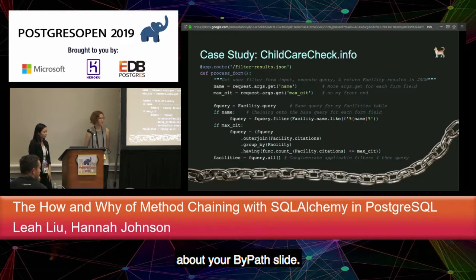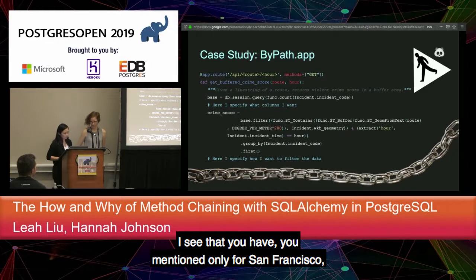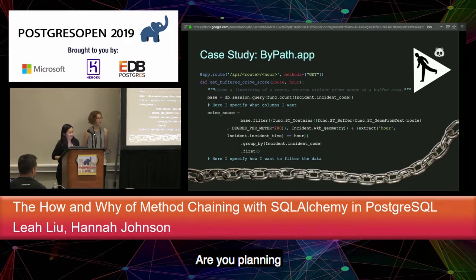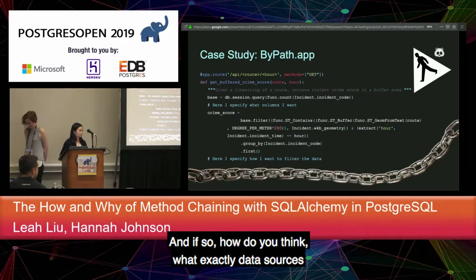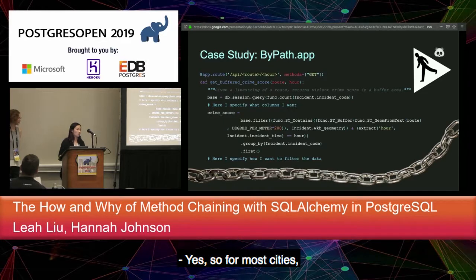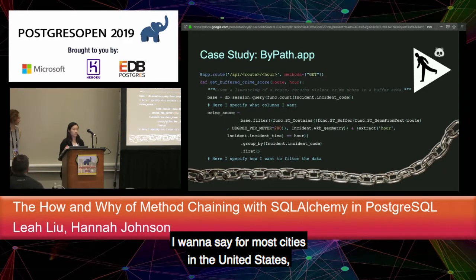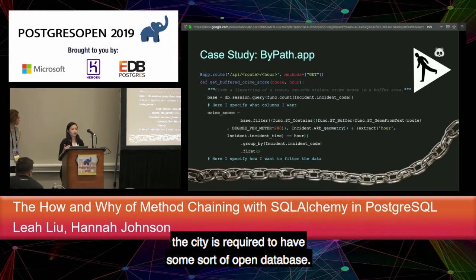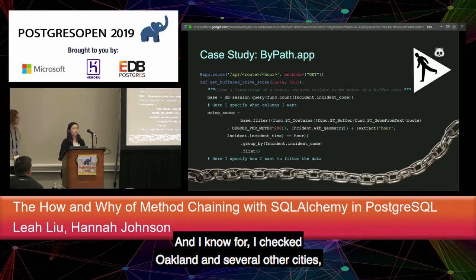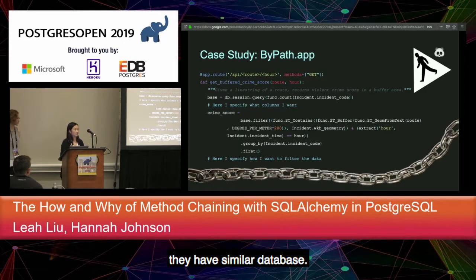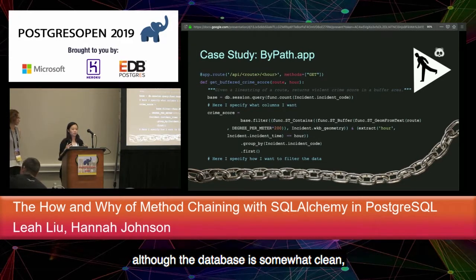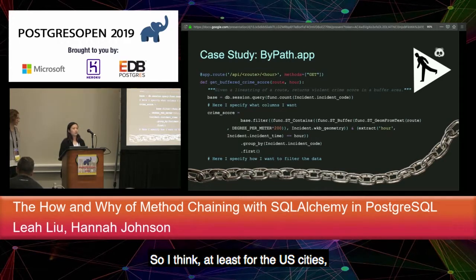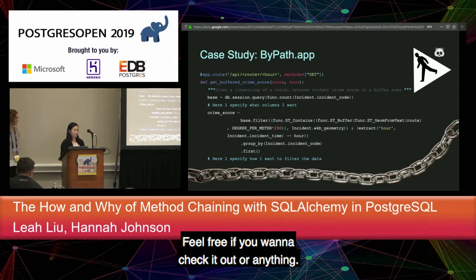An audience question about the MyPath app: the data is currently only for San Francisco. Are there plans to add more cities or countries? The response: for most US cities there are requirements to maintain open databases, which is the data source used. Oakland and several other cities have similar databases. The original plan was to cover the whole Bay Area, but different cities store different information. Expanding to more US cities is definitely possible, and all the source code is on GitHub.